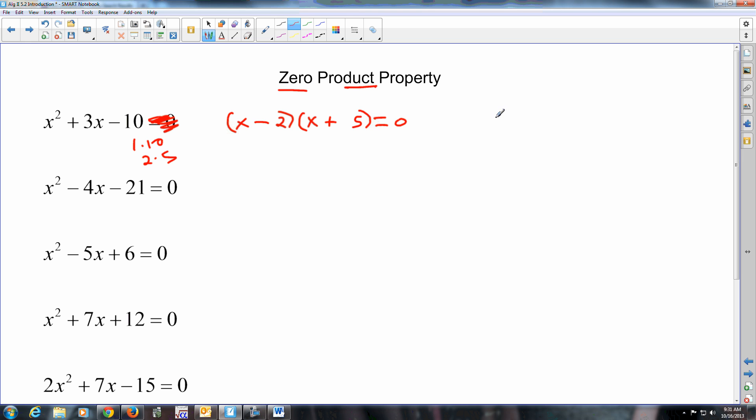What the 0 product property says is that if you got something times something and it equals 0, one of those, at least one of them, has to be worth 0. What you end up doing is you set both of them equal to 0 and solve for the variable. So here you have this product. You're multiplying these together and it equals 0. What numbers make it 0? Set both pieces equal to 0 and solve. That's the 0 product because it's a product and it equals 0. Add the 2, subtract the 5, your answers are 2 and negative 5. Those are the numbers that make this thing equal to 0.